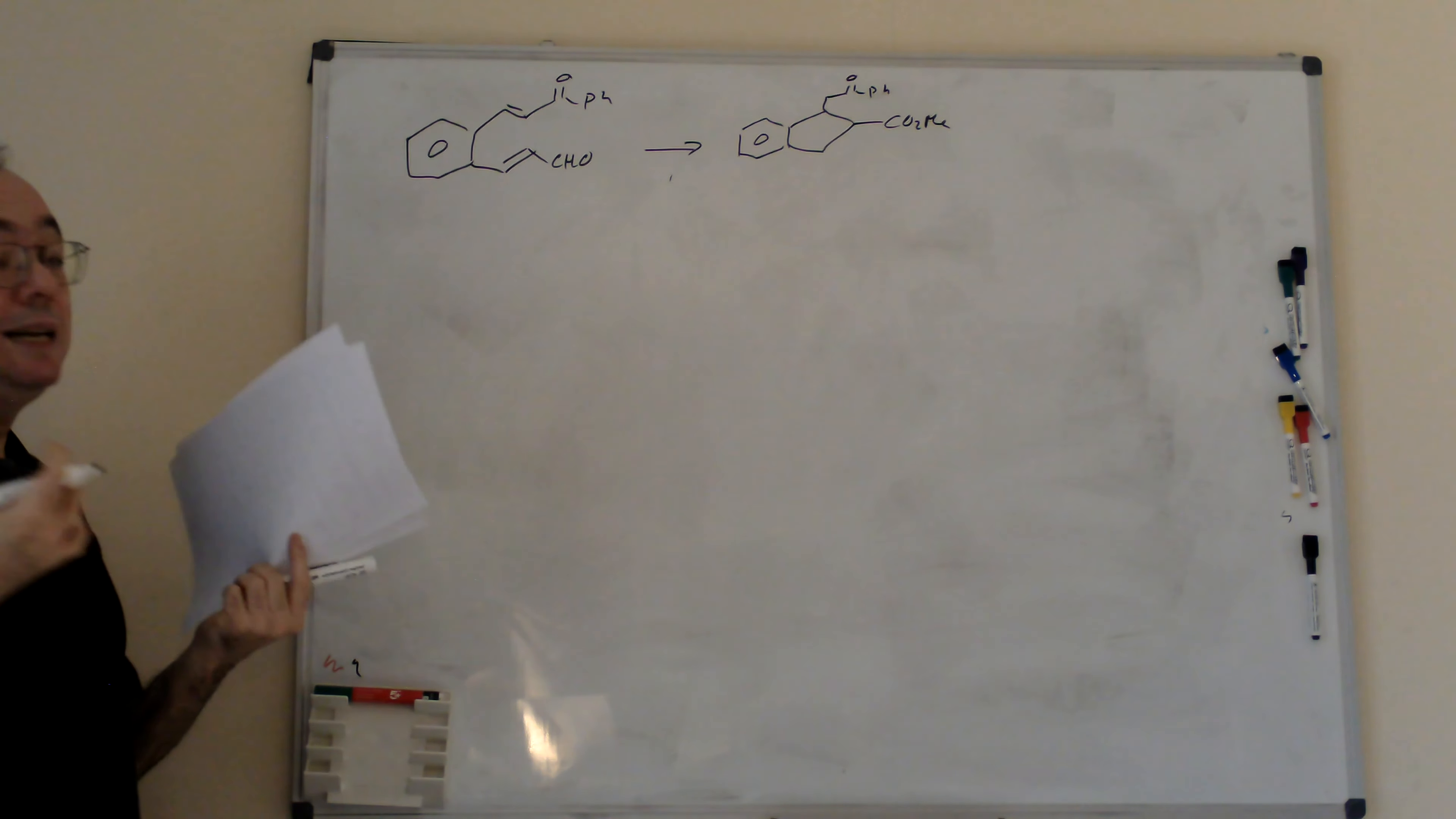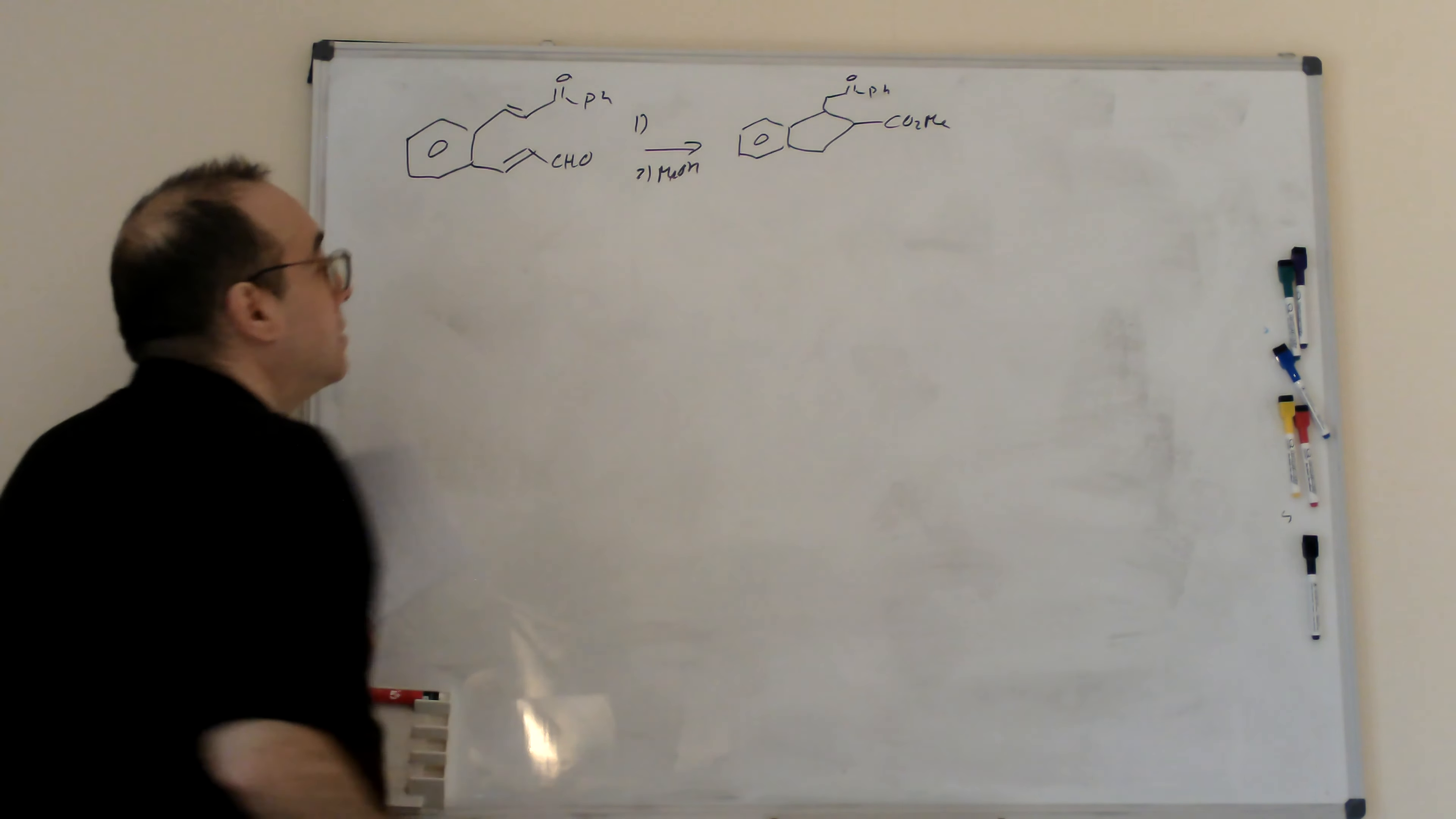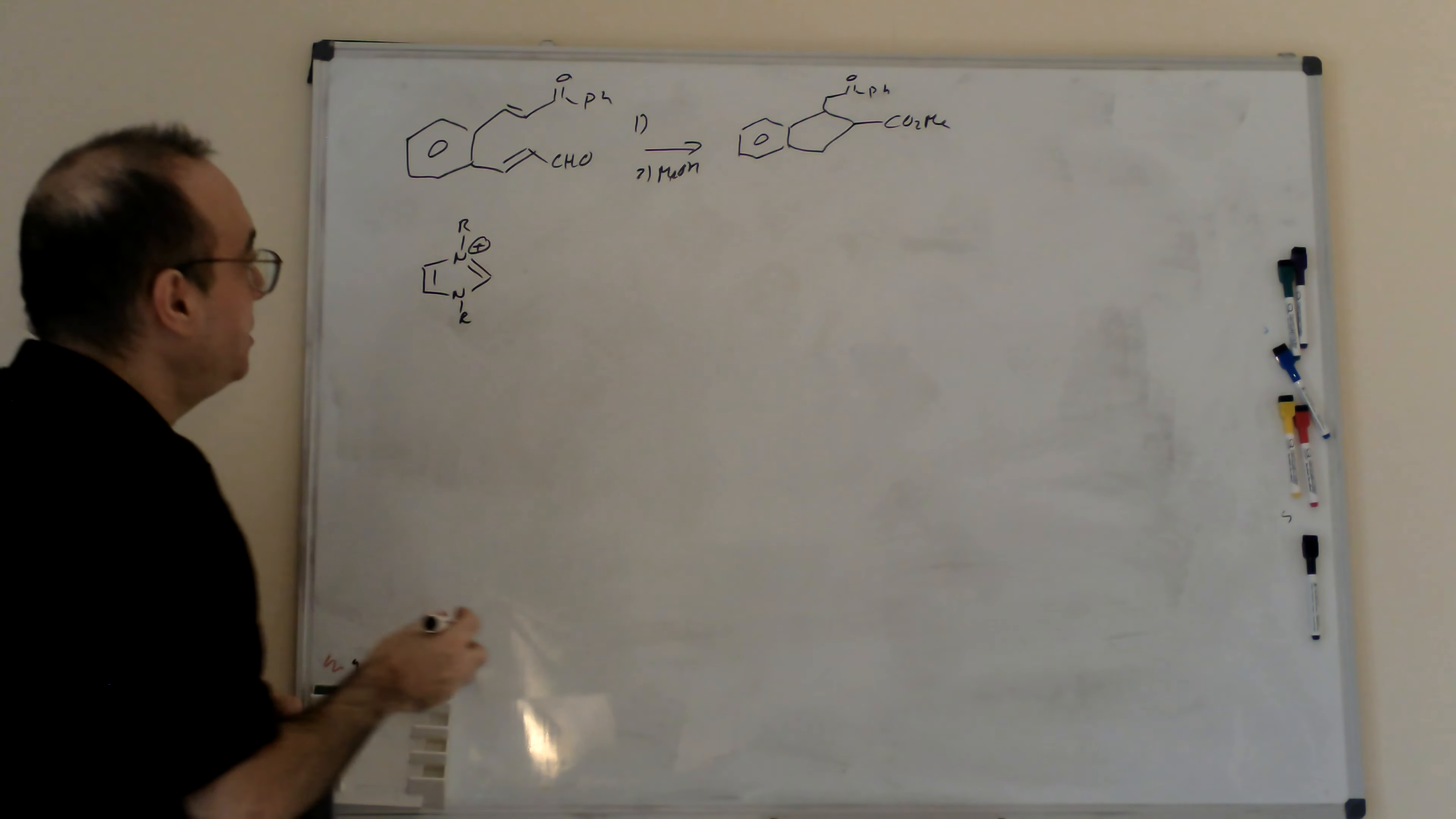Again, I cannot determine the interest of the activity. That means I draw it without any kind of indication, and I will work from this. Okay, again, I draw the easy possible carbene precursor, that's with a base.